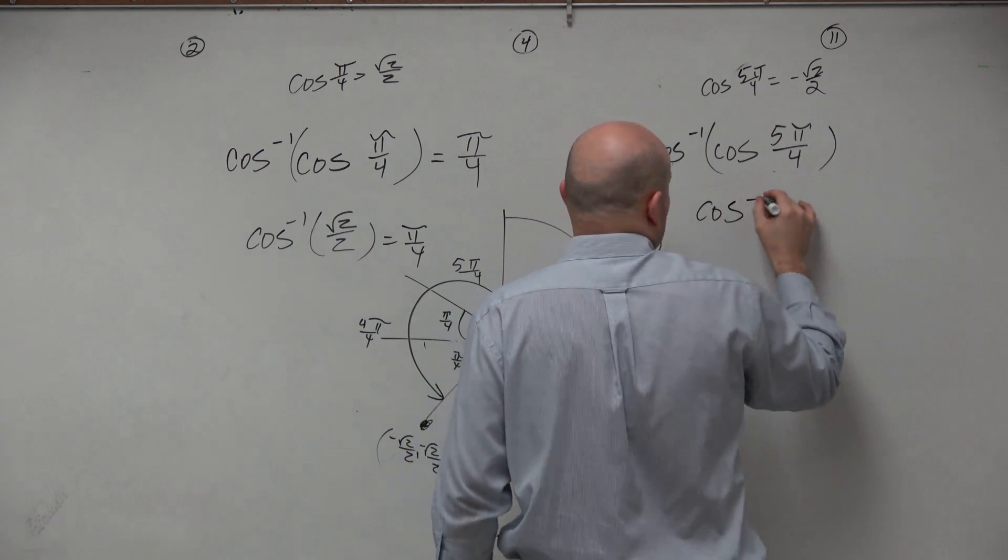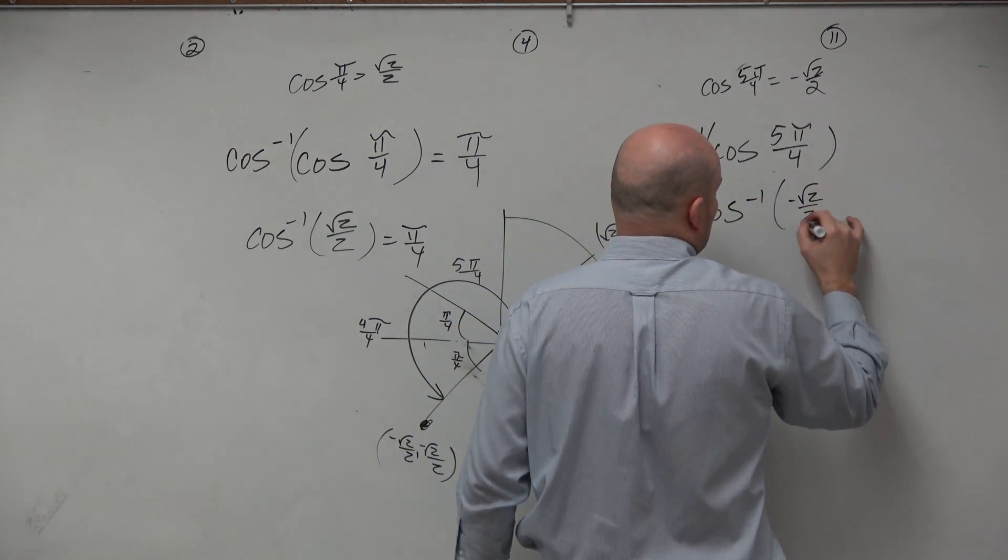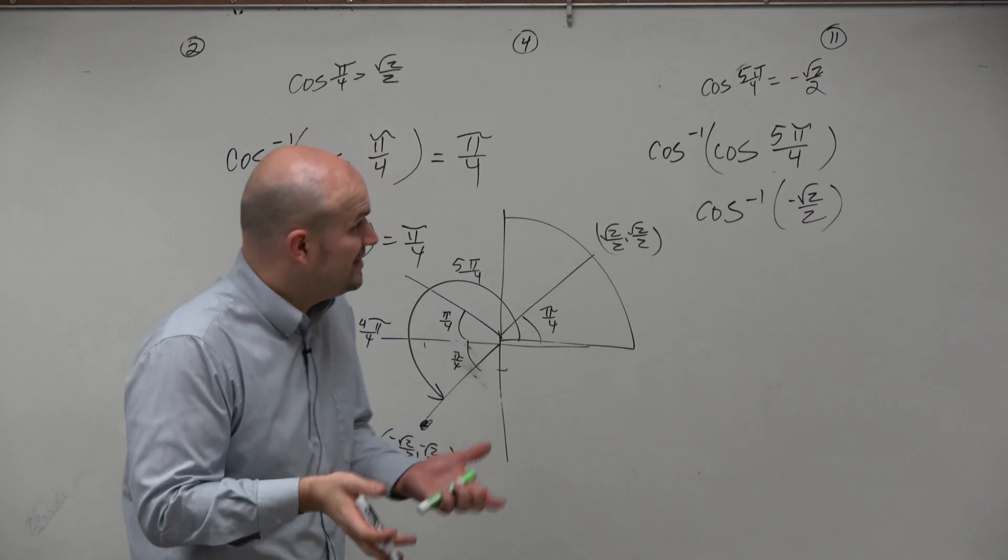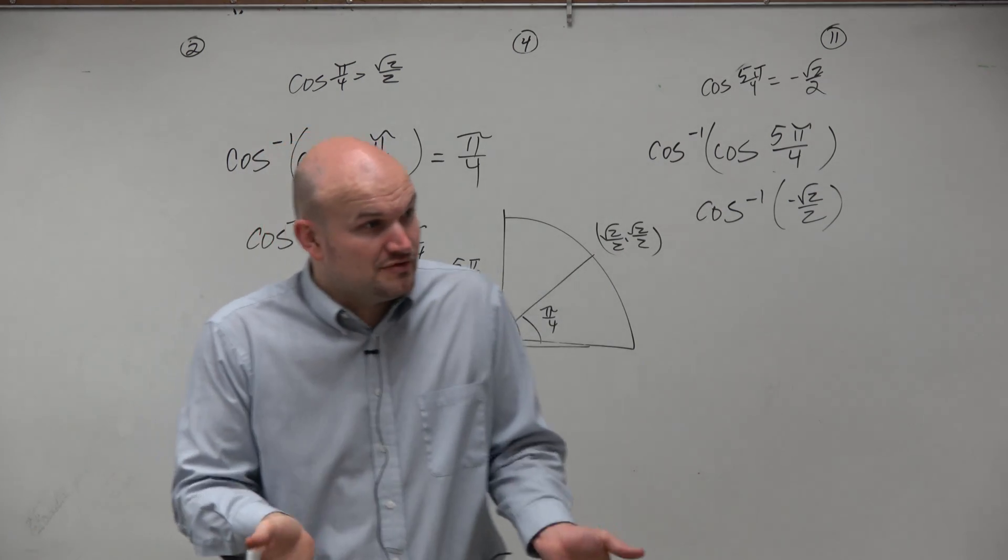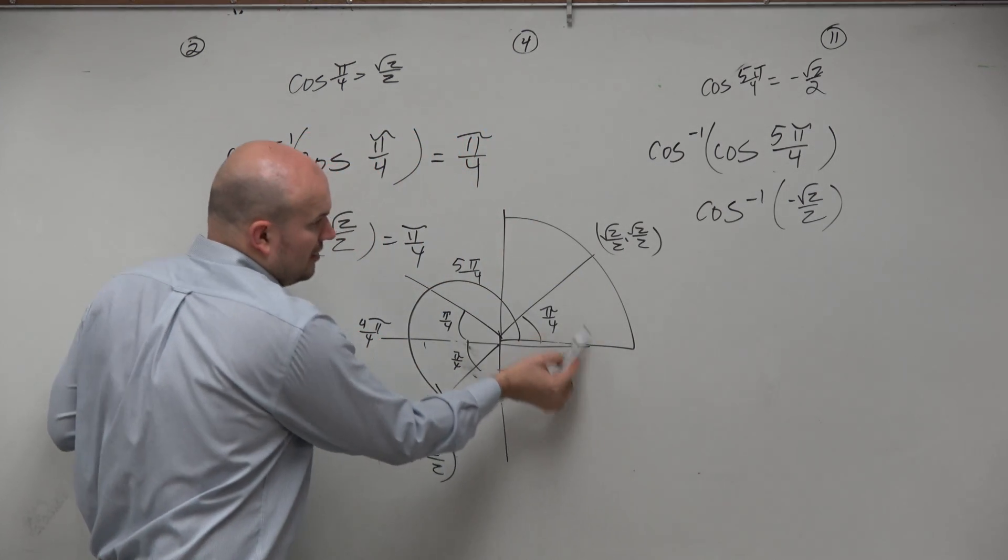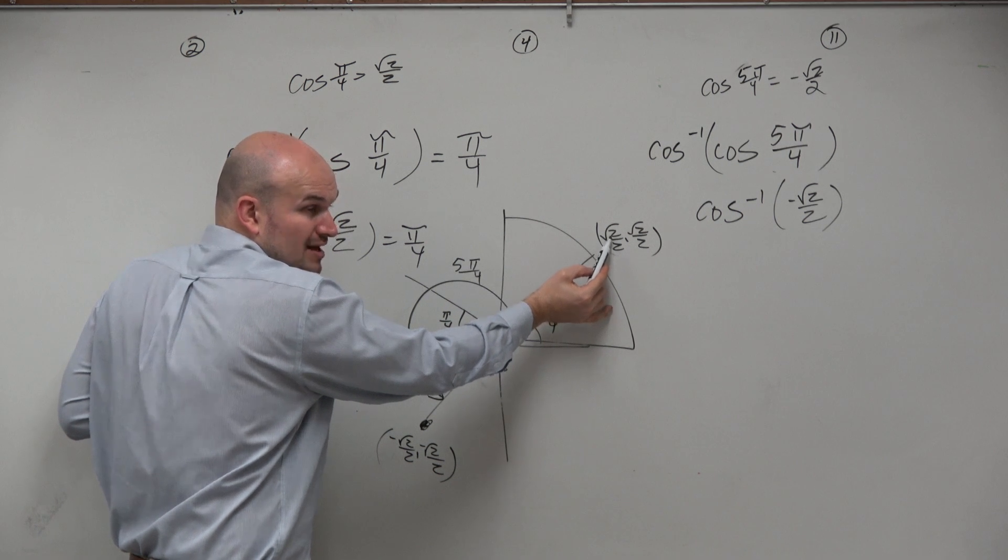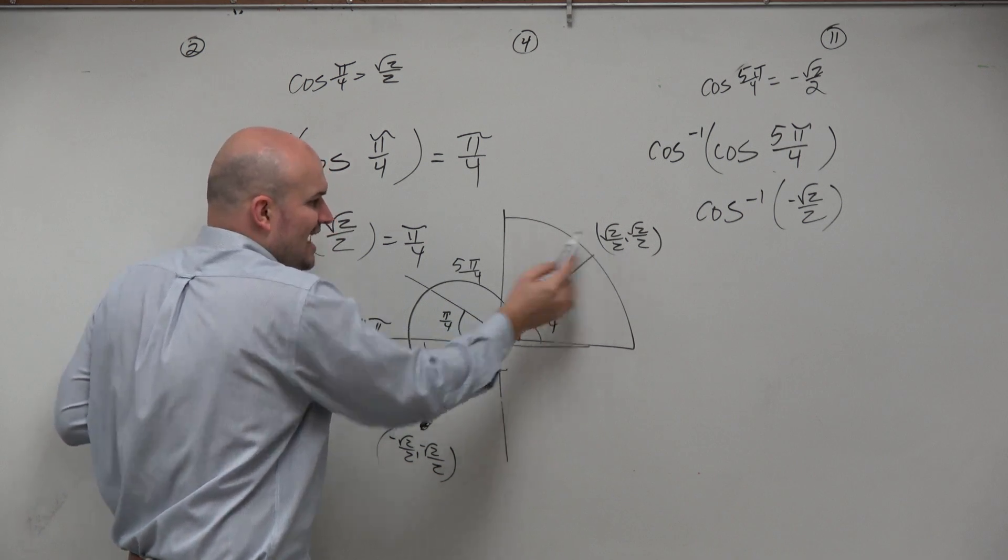So then we go to cosine inverse of negative square root of 2 over 2. Now, we want to evaluate what angle gives us negative square root of 2 over 2. Well, we know that pi over 4 gives us square root of 2 over 2. But we want to find its negative. So when is it negative?